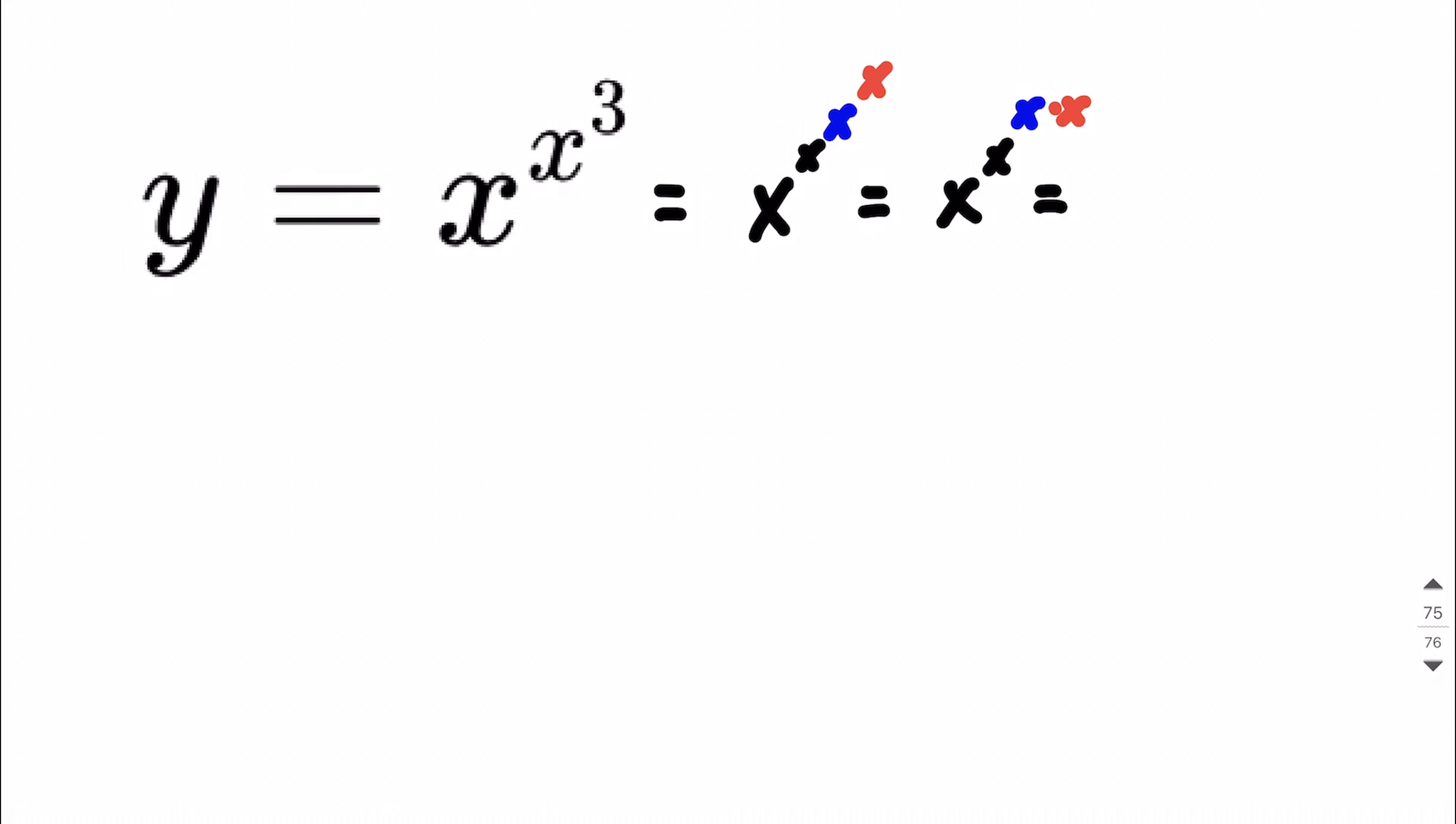And then what you could do is you could say x to the x power, and then the blue x times the red x, that's two copies of x multiplied together. So what I'm going to say is two copies of x multiplied together is the same thing as x squared.